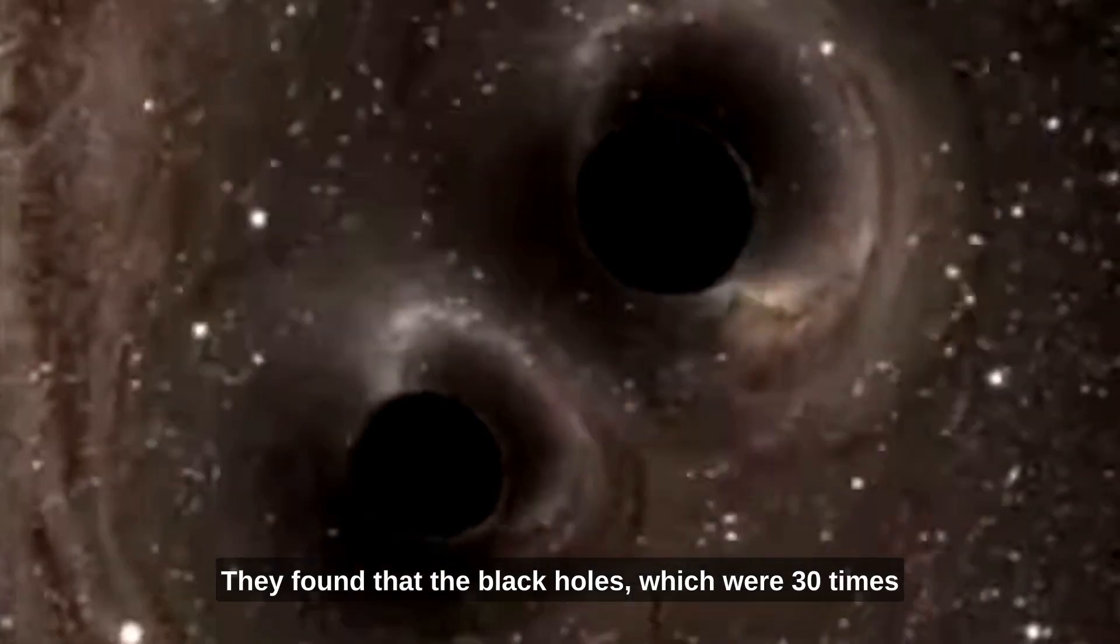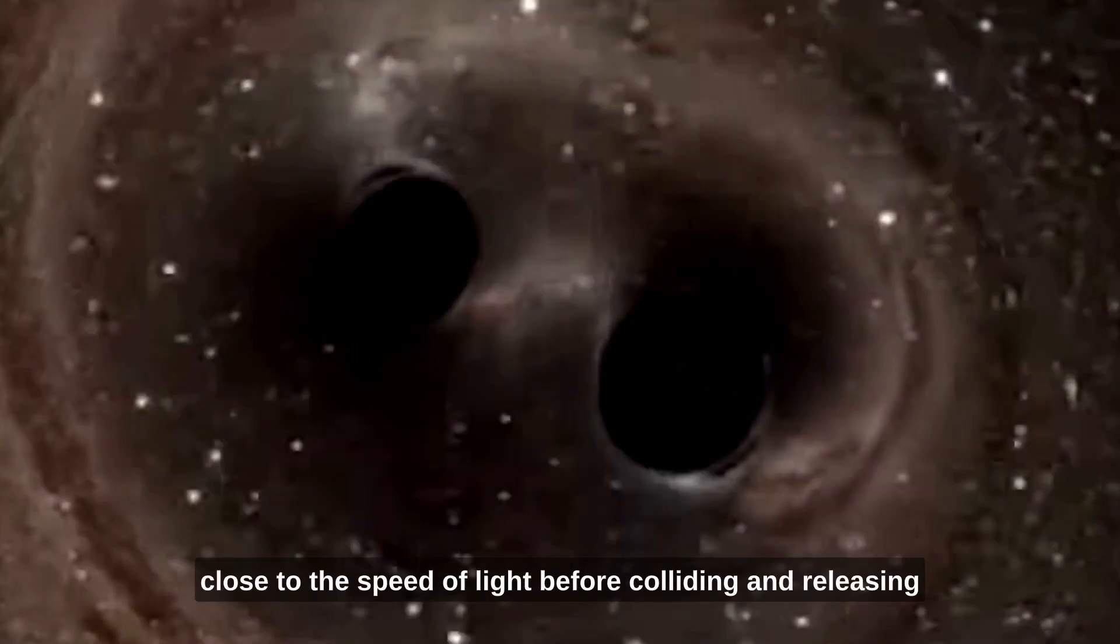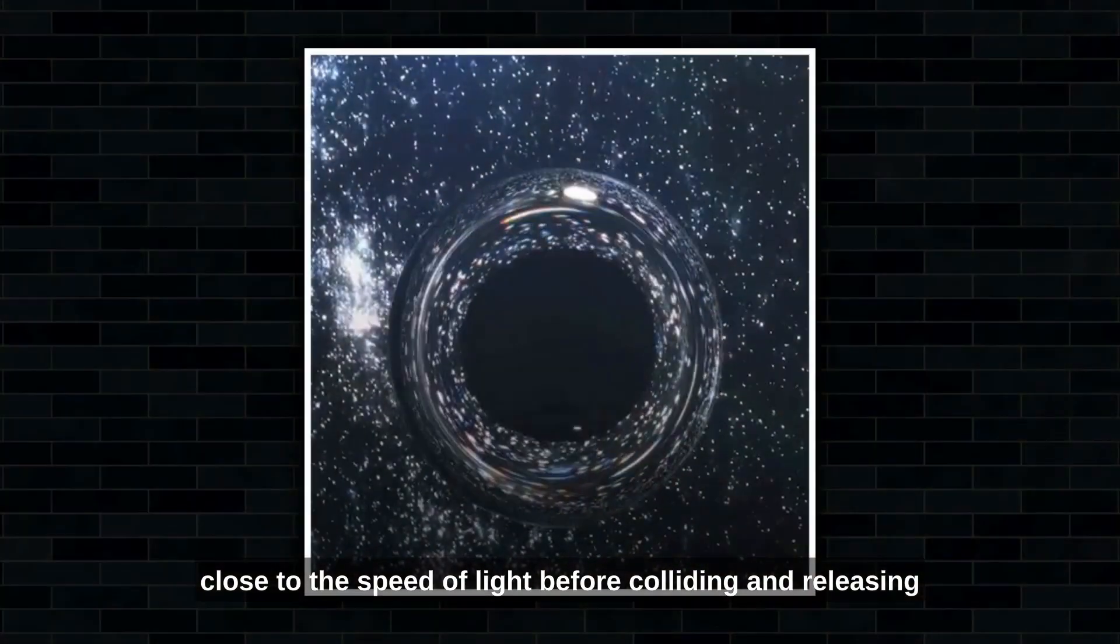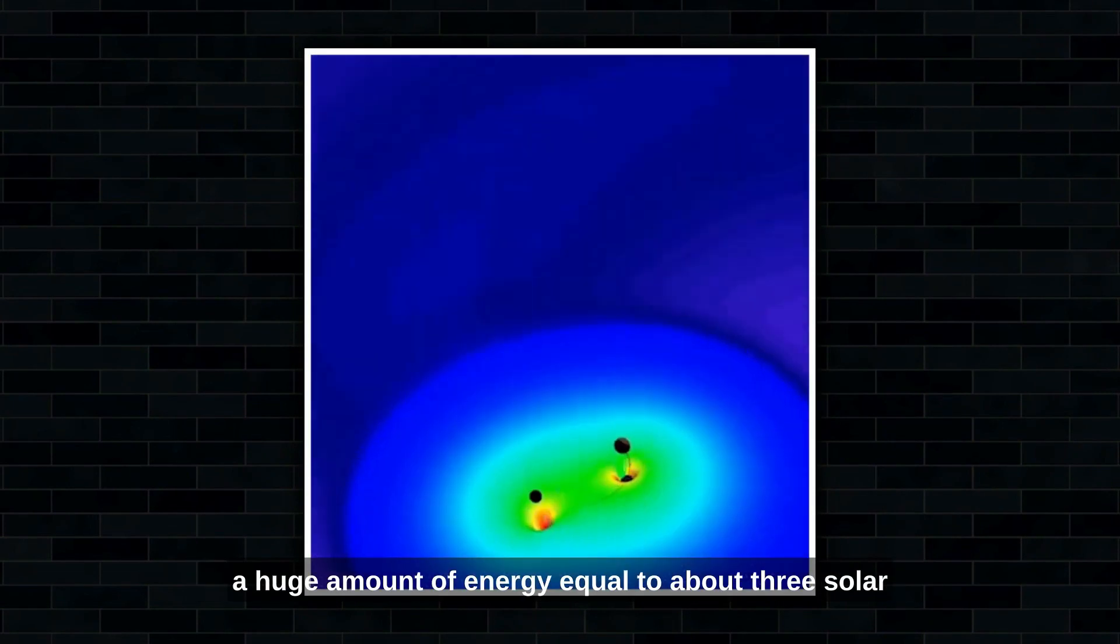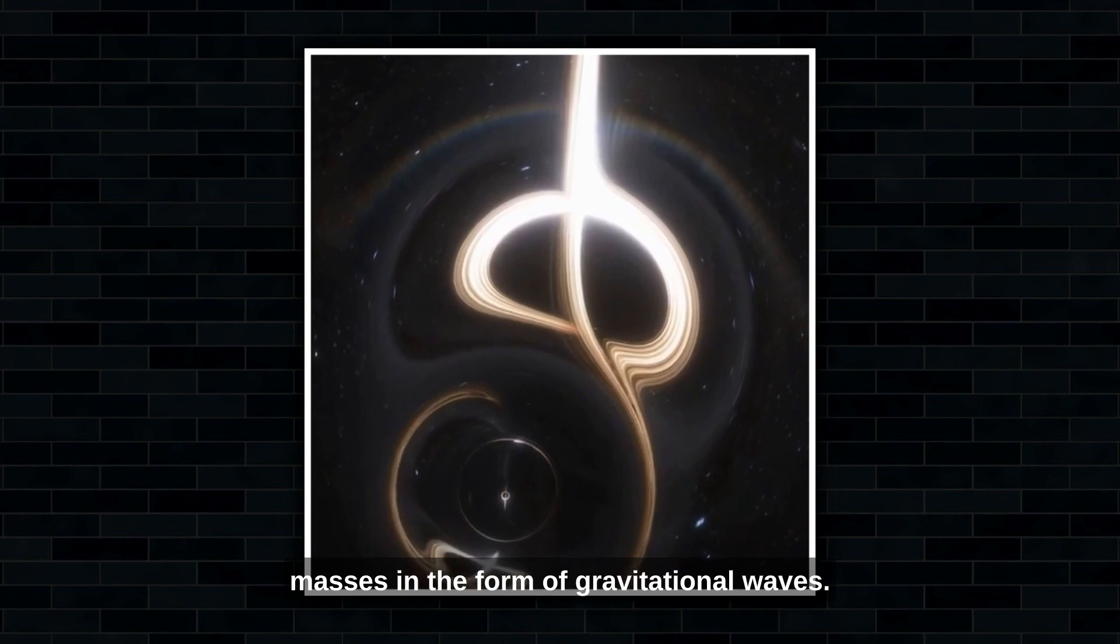They found that the black holes, which were 30 times as big as our Sun, circled around each other at close to the speed of light before colliding and releasing a huge amount of energy equal to about three solar masses in the form of gravitational waves.